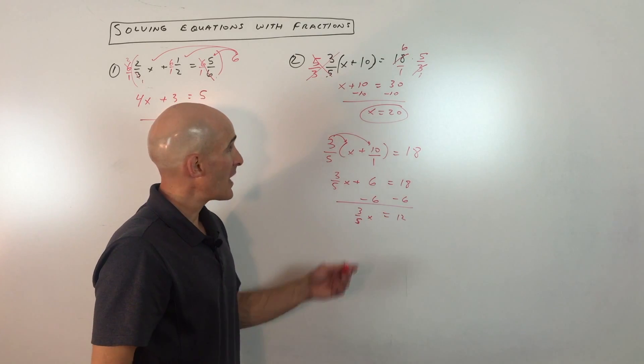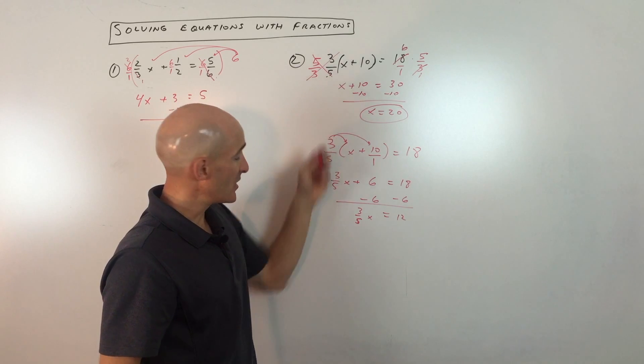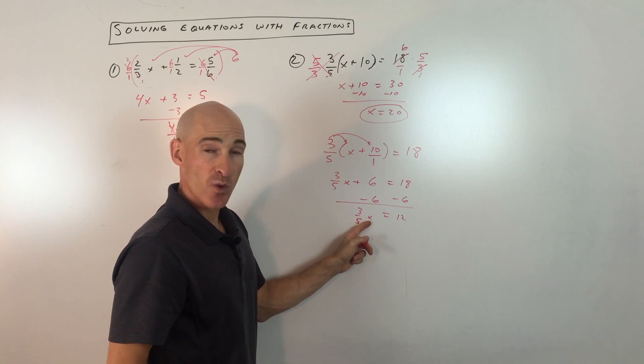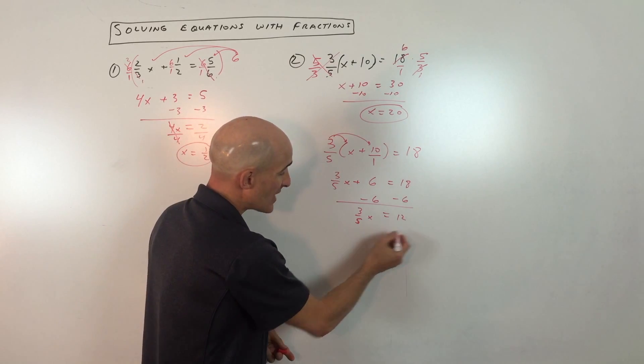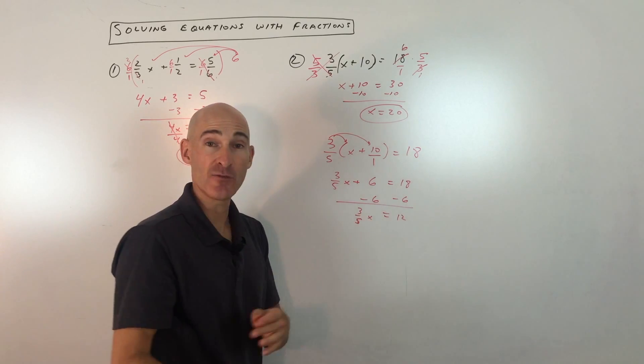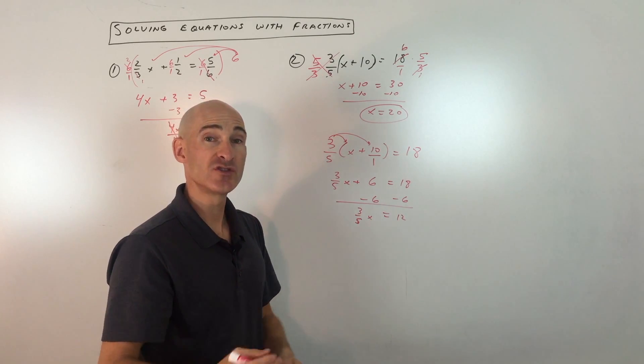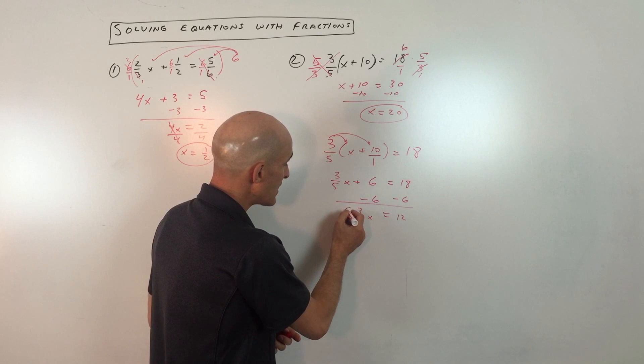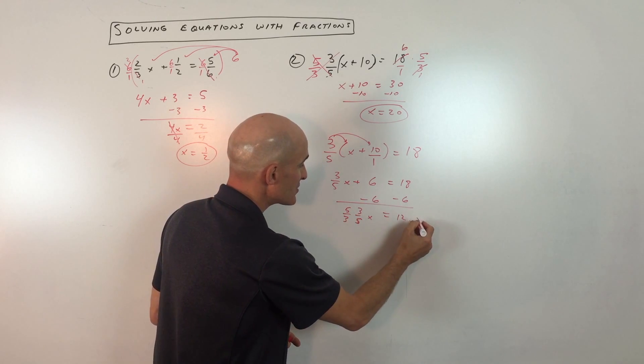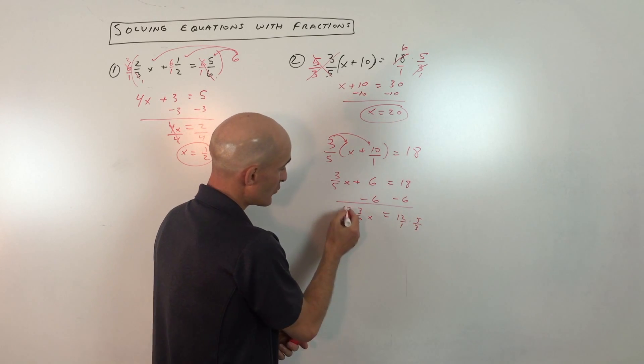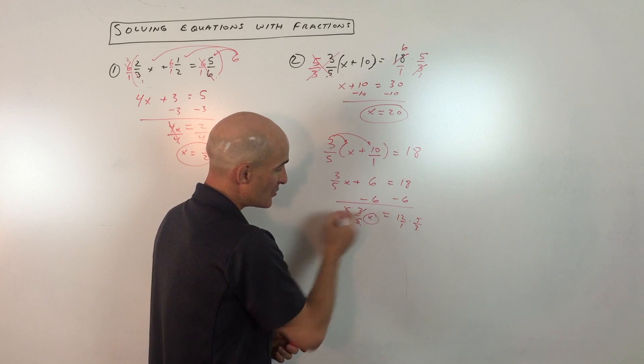Now at this point, we're kind of in the same position we were here originally. We want to get rid of that 3 fifths. We just want x. We could divide both sides by 3 fifths, since that's the opposite of multiplying by 3 fifths. Or we could use a multiplicative inverse, which works out to be a little bit easier for most students. Sometimes you just multiply by the reciprocal. That way these cancel and these cancel, and you get the x by itself.